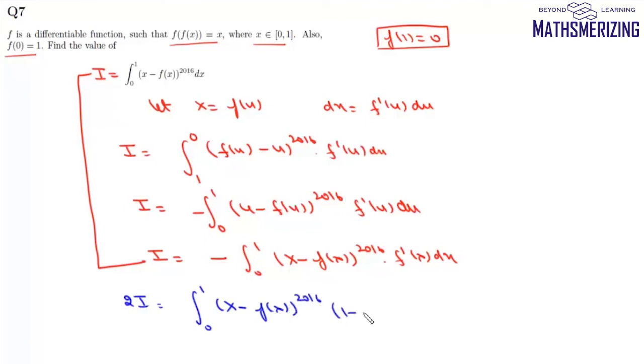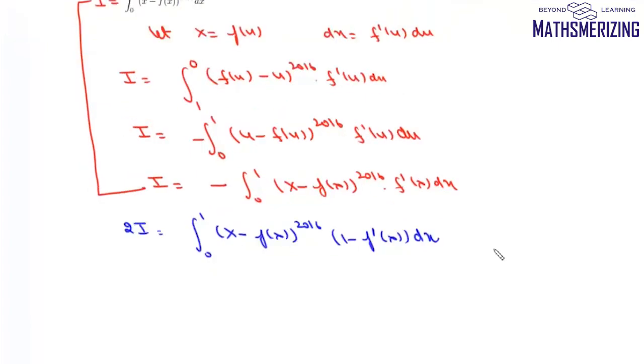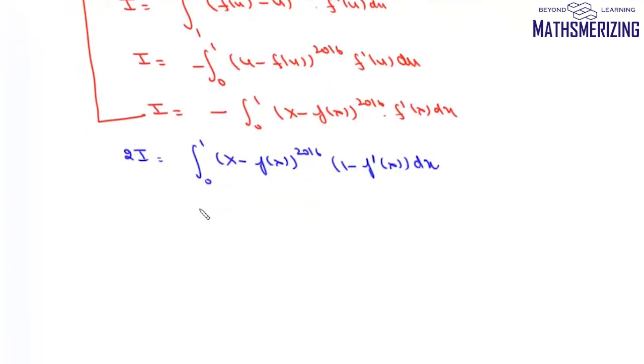This equals the integral from 0 to 1 of (x - f(x))^2016 (1 - f'(x))dx. Now we'll use substitution again. Let (x - f(x)) = t, then (1 - f'(x))dx = dt. So we can write this integral as 2I equals the integral of t^2016 dt.